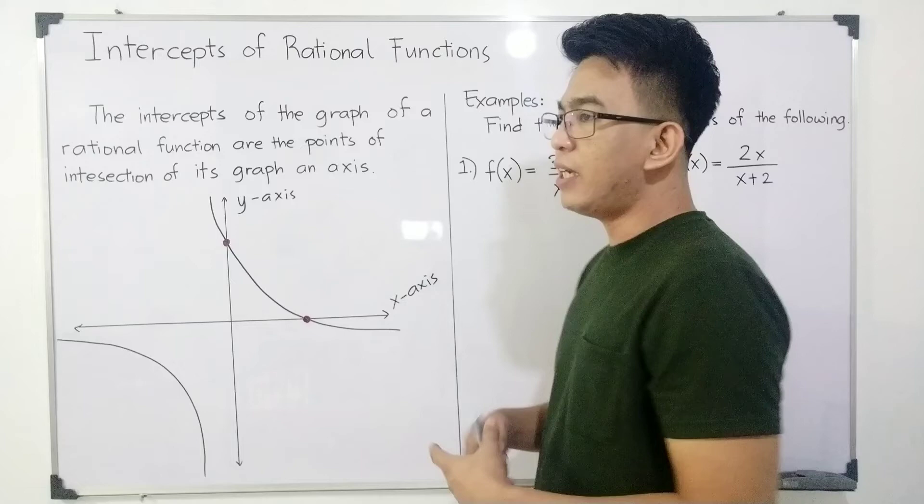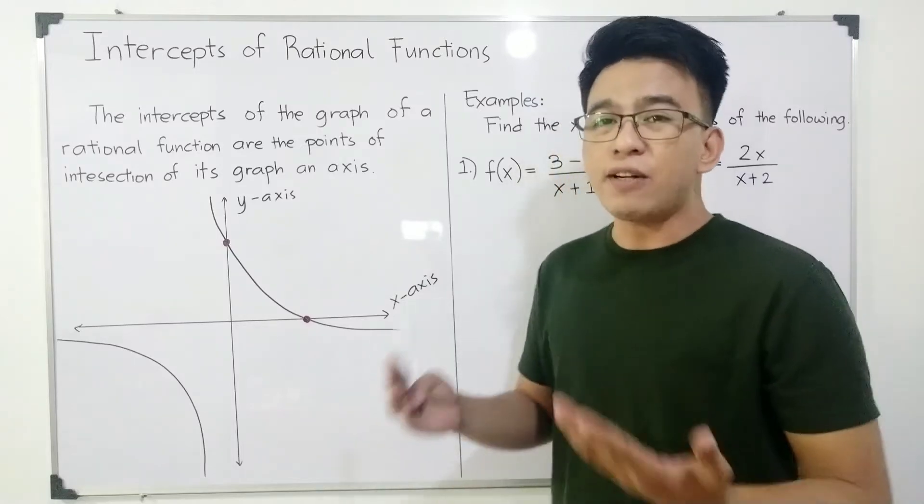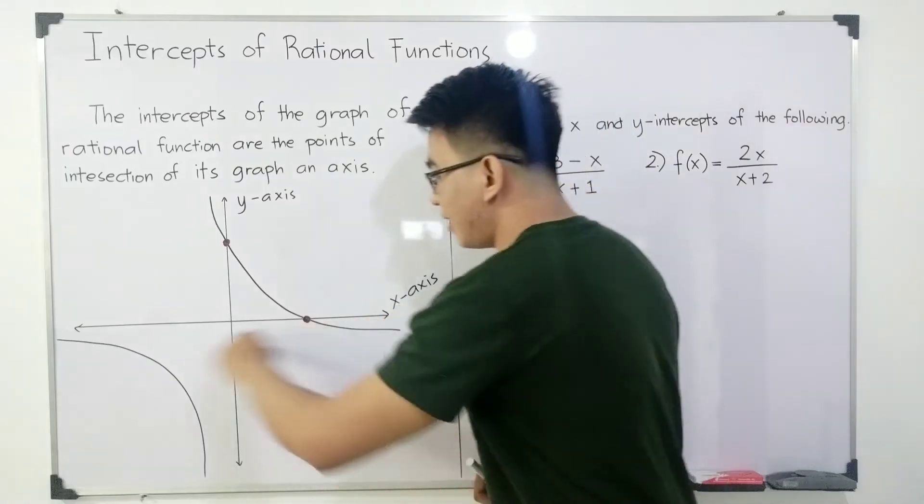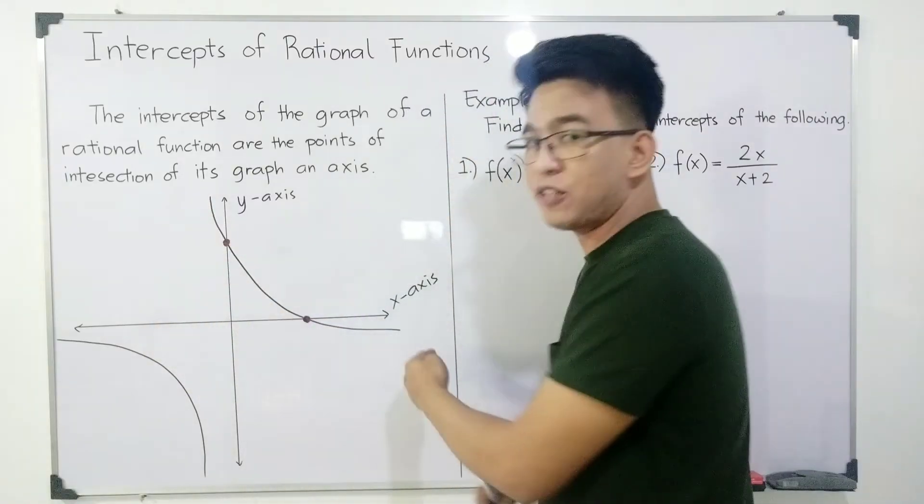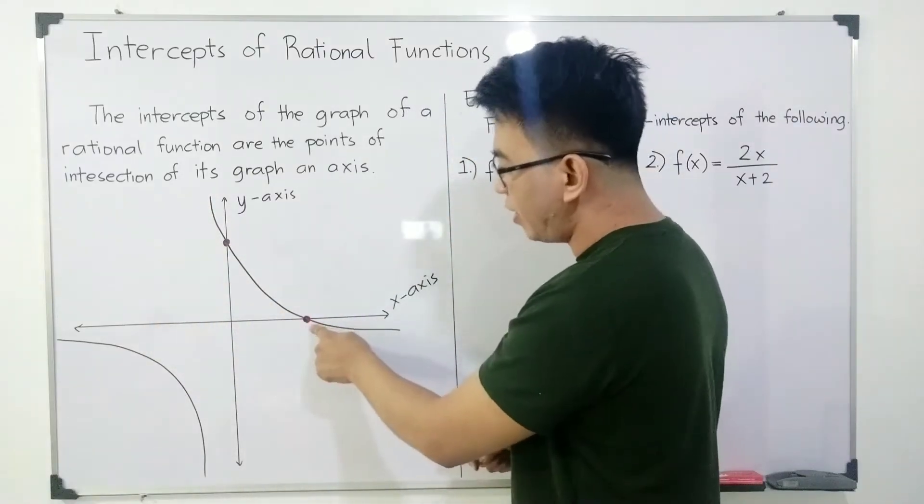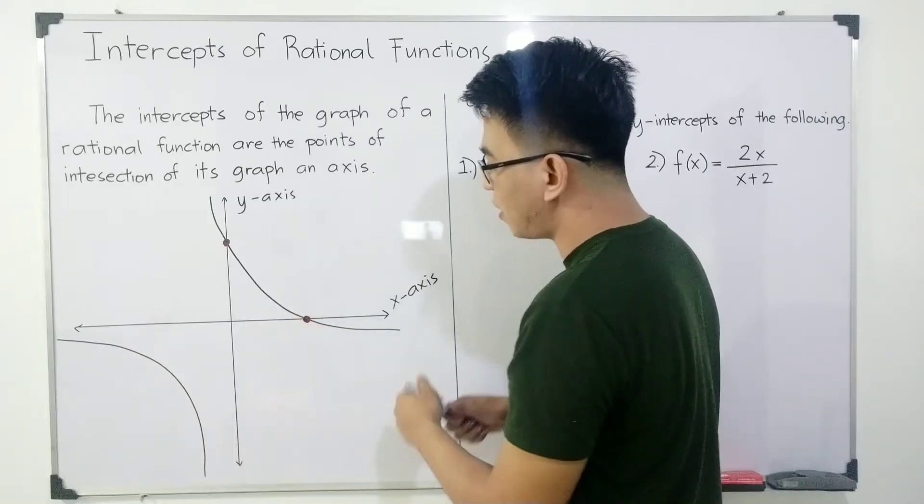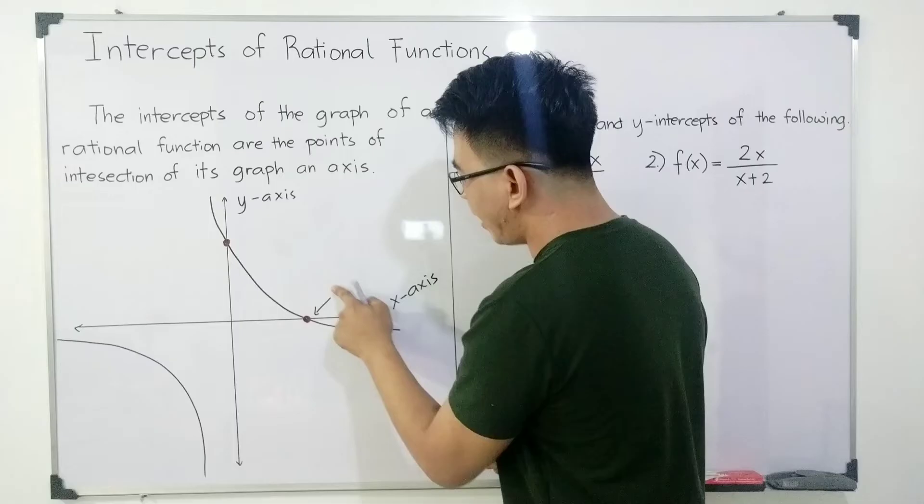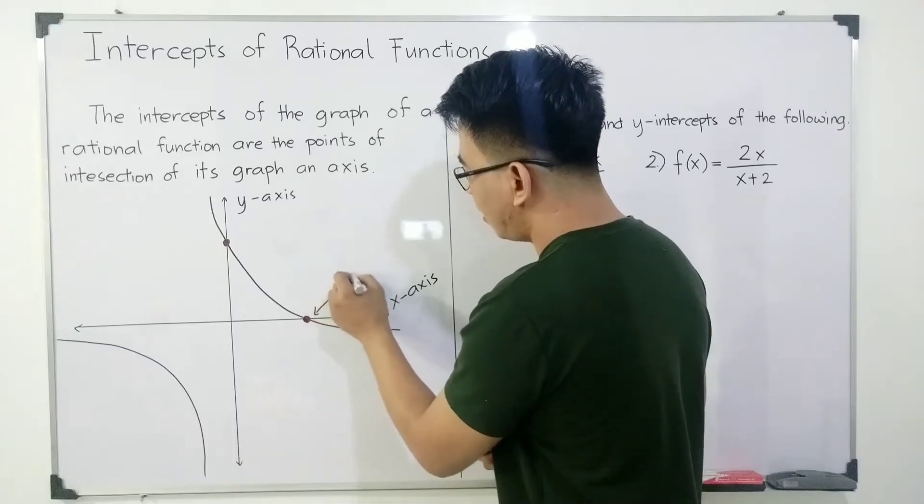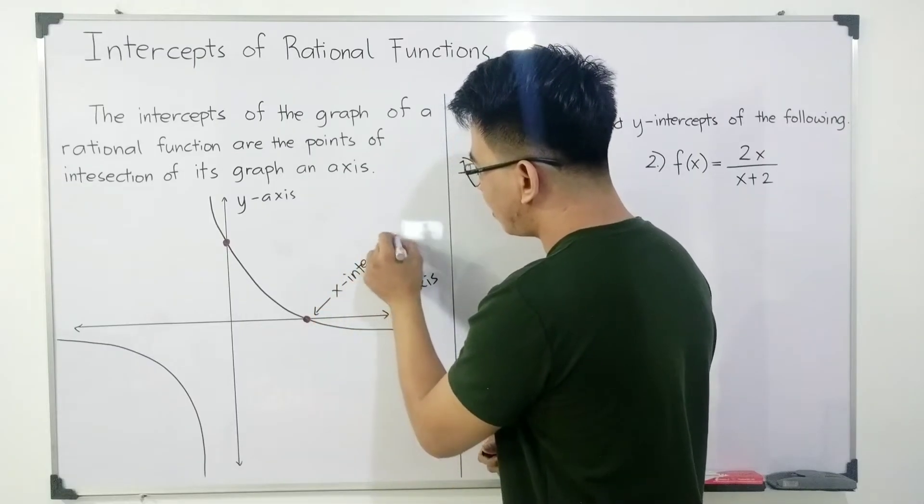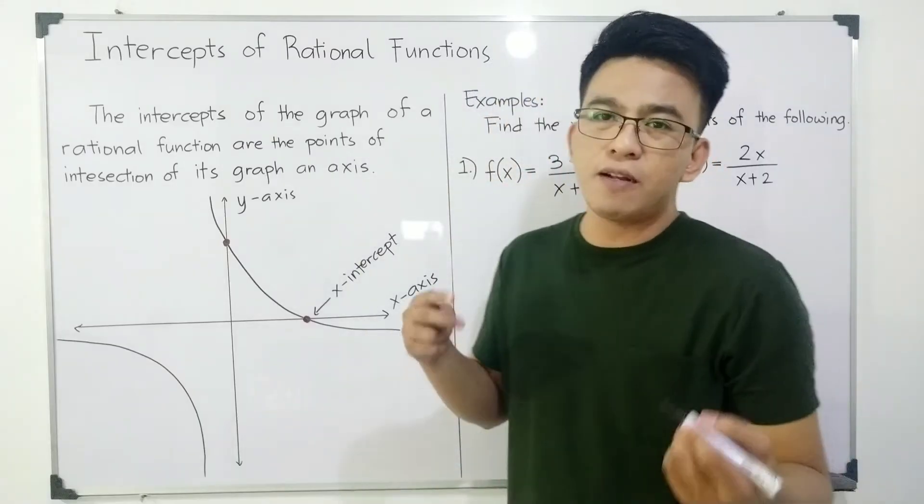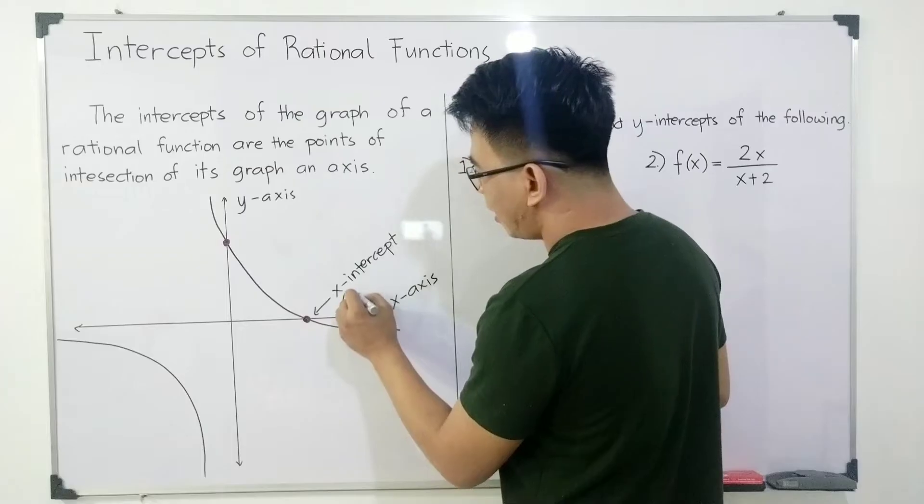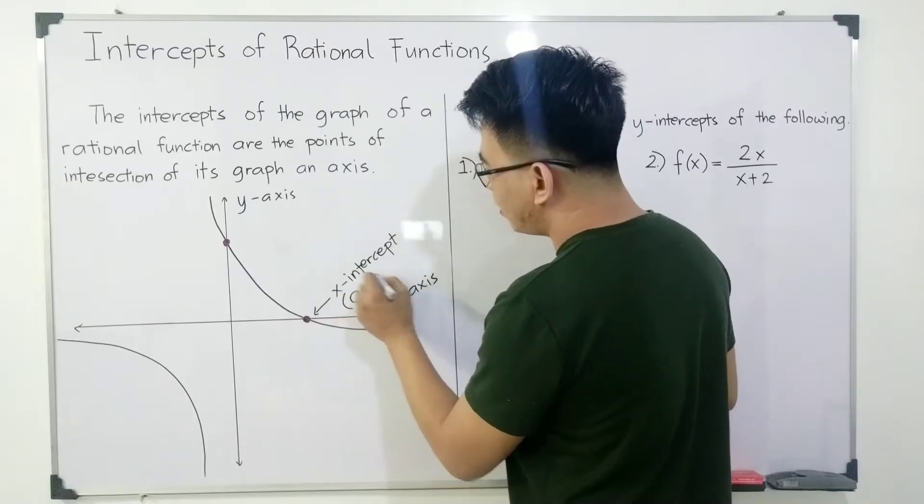The x-intercept is definitely the intersection or the point of intersection between the x-axis and the graph of the rational function. And this one is their point of intersection. Therefore, this is your x-intercept. And as for the x-intercept, its coordinates are (a, 0). This means your y is equal to 0.